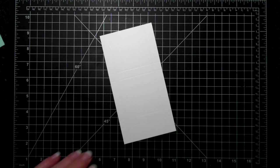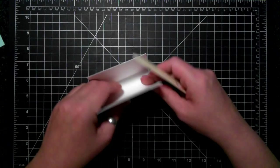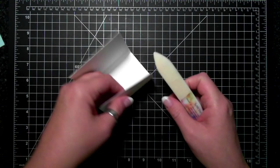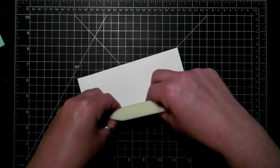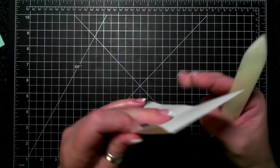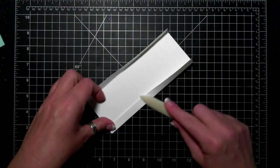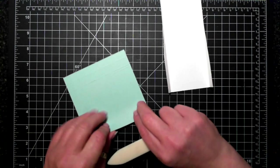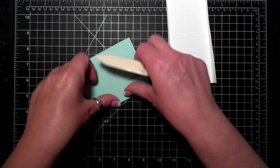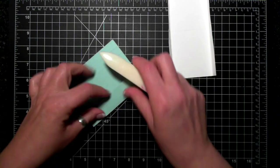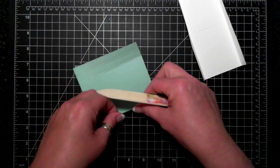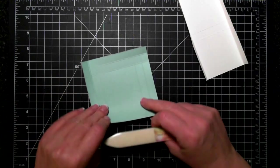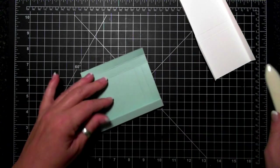Half an inch on this side. This is whisper white thick that I'm using here. That's all the scoring that we're going to need. Now to fold and burnish those score lines.